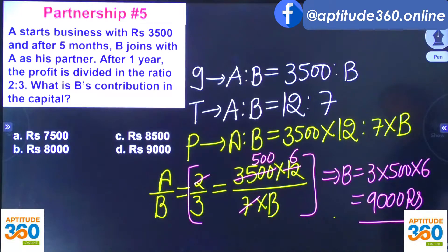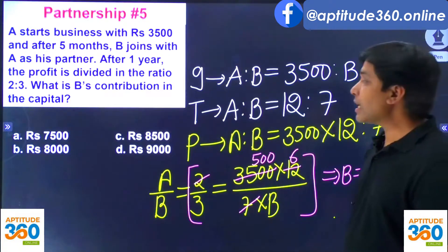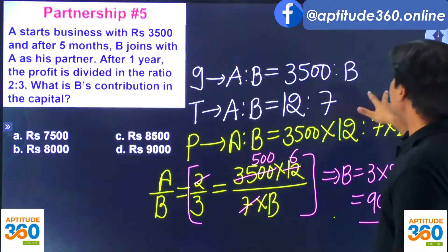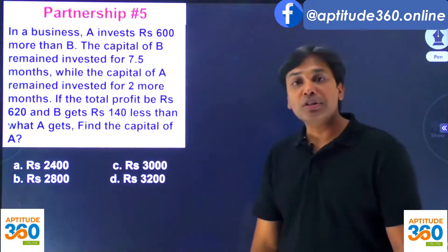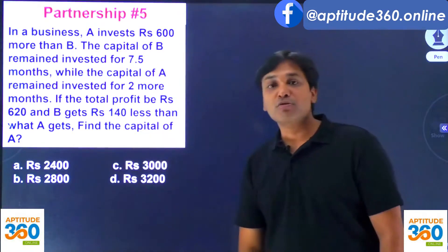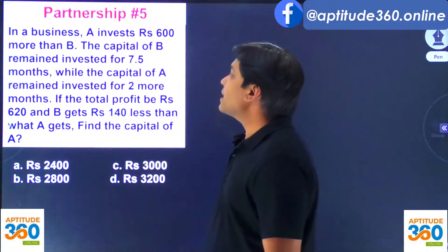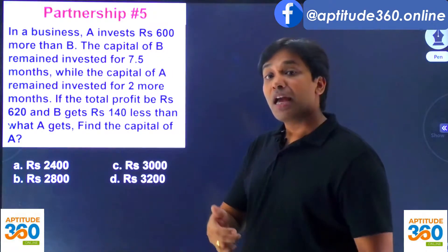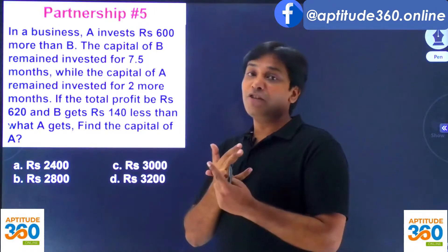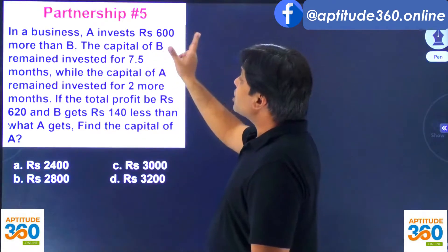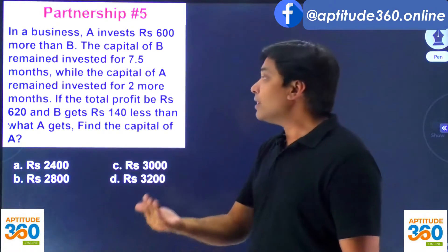I hope you understood this problem — we are going in reverse order. Now try to solve this next problem. It says that in a business, A has invested rupees 600 more than B. Neither the value of A nor the value of B is given to you; it has just been mentioned that A is investing 600 rupees more than B.